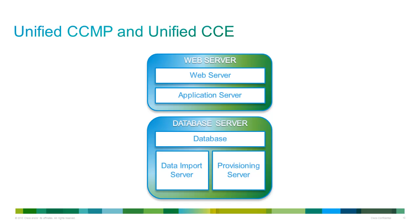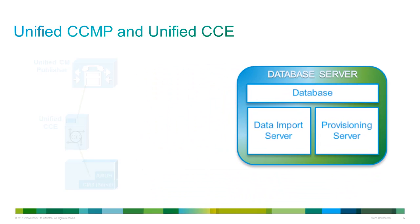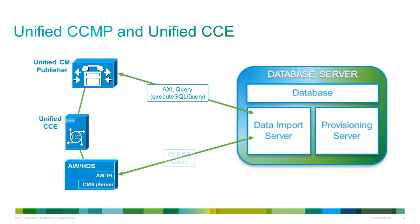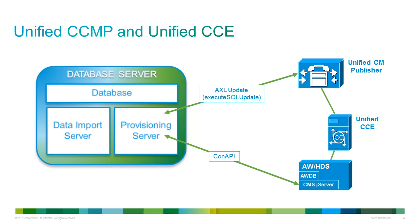Regardless of the deployment model used, communications between the application server and the CCMP database is via an OLEDB connection over TCP 1433. Communication between the data import server and Unified CCE uses AXL over TCP 8443, whereas between the data import server and Unified CM we use an OLEDB connection over TCP 1433. We still use AXL over TCP 8443 between the provisioning server and Unified CCM, however we need to use CONAPI between the provisioning server and Unified CCE. The connection to Unified CCM should always be to the publisher, not a subscriber, and the CONAPI connection must be to the primary administration and data server.